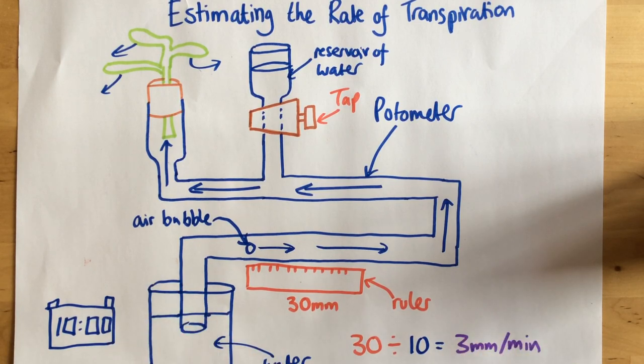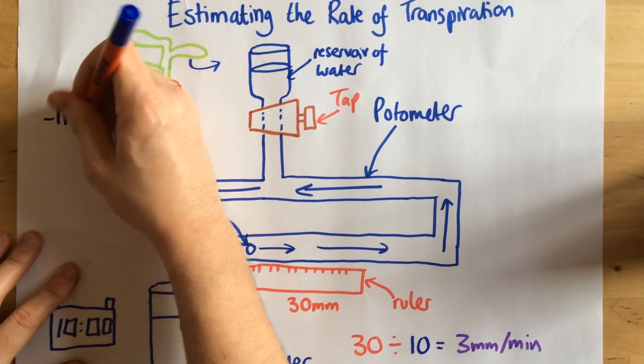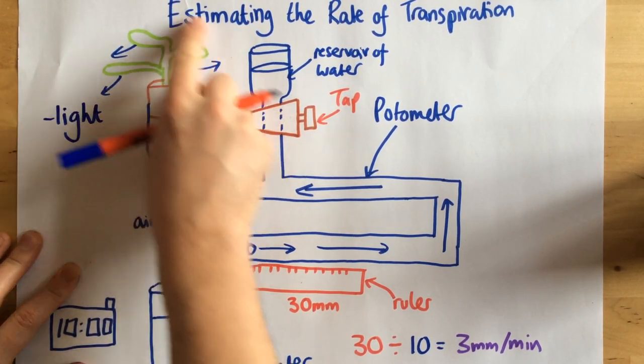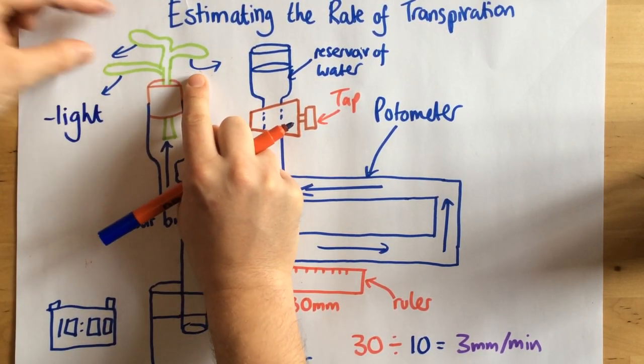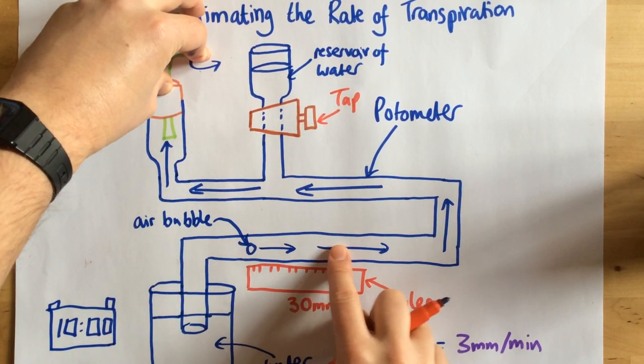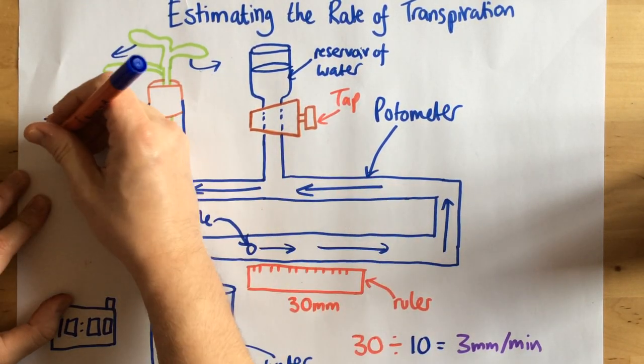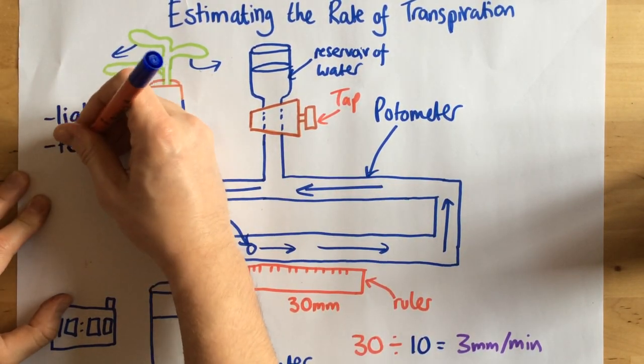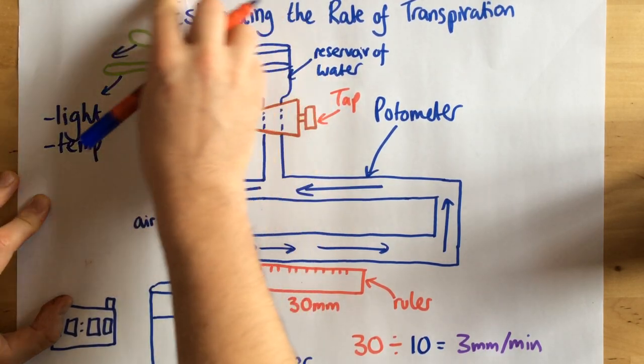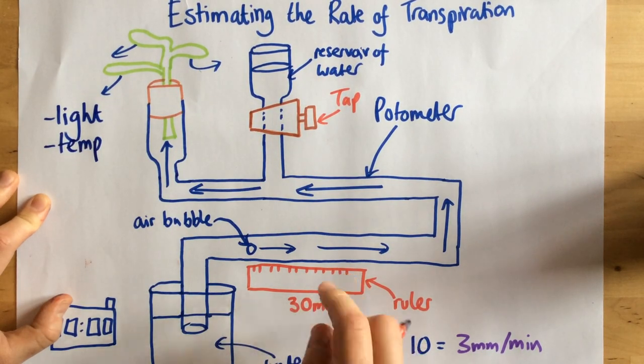So different things I might want to be looking at each time, I might change the light intensity. So I might see how the light intensity, so the light that I'm shining on the plant, affects the rate of transpiration. My independent variable, the thing that I change, might be the temperature. I could change the temperature to see how that affects the rate of transpiration.